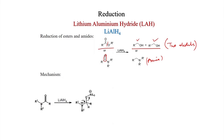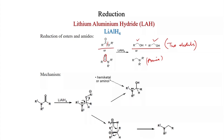Mechanism of amide reduction: the carbonyl is first reduced to give an alkoxide, which on elimination generates an imine (C=N). The imine is activated by aluminum binding to nitrogen, hydride is delivered to the iminium carbon, and the amine results. Alternatively, a hemiaminal (aminal) can form and upon hydrolysis give a secondary amine plus a carbonyl compound — a possible side reaction.